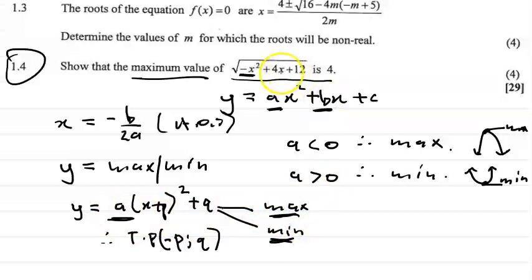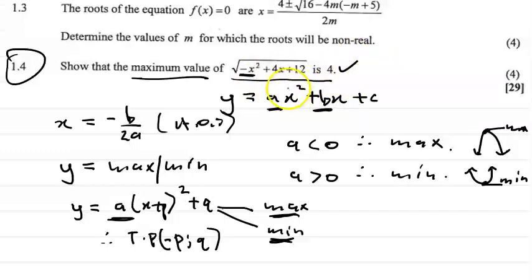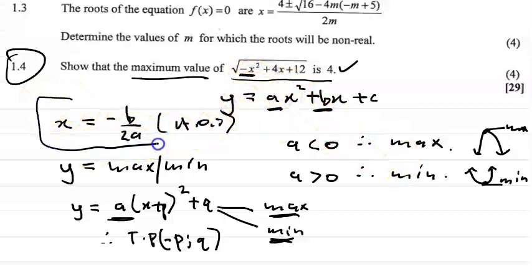So let's look at our question — the square root of minus x squared plus 4x plus 12 — and show that the maximum value is 4. We can do this in one of two ways: by completion of the square, or by using the formula x equals minus b over 2a.